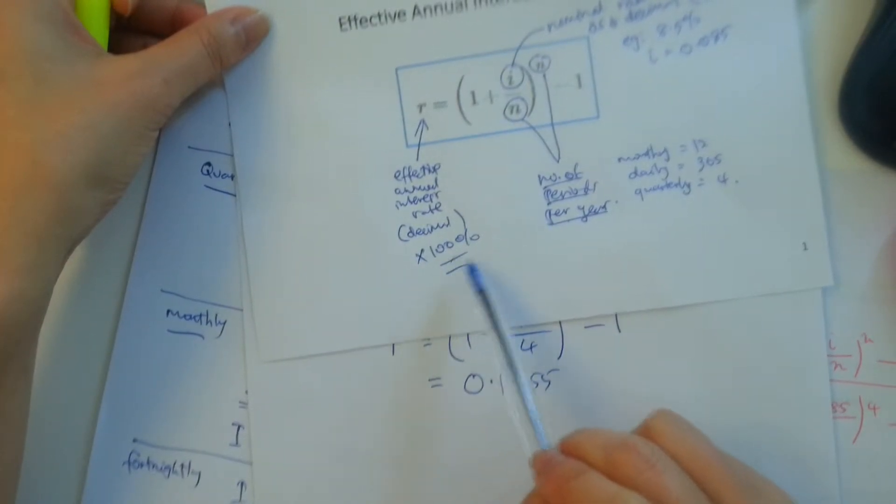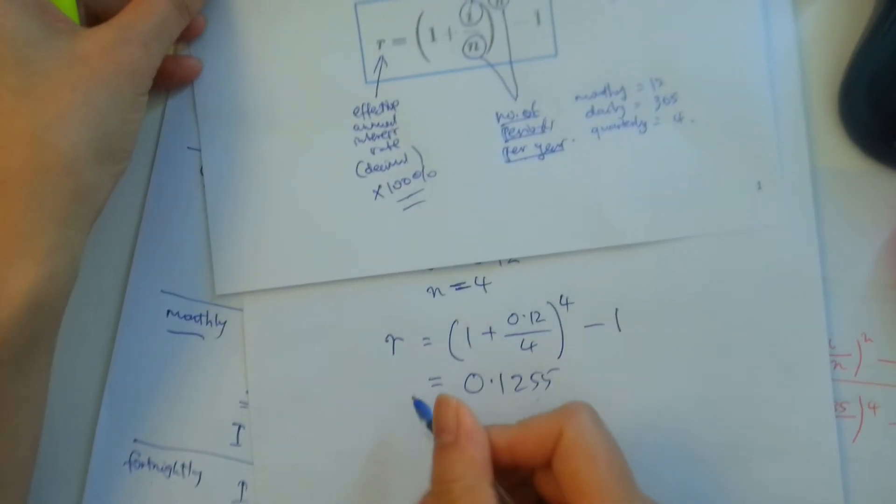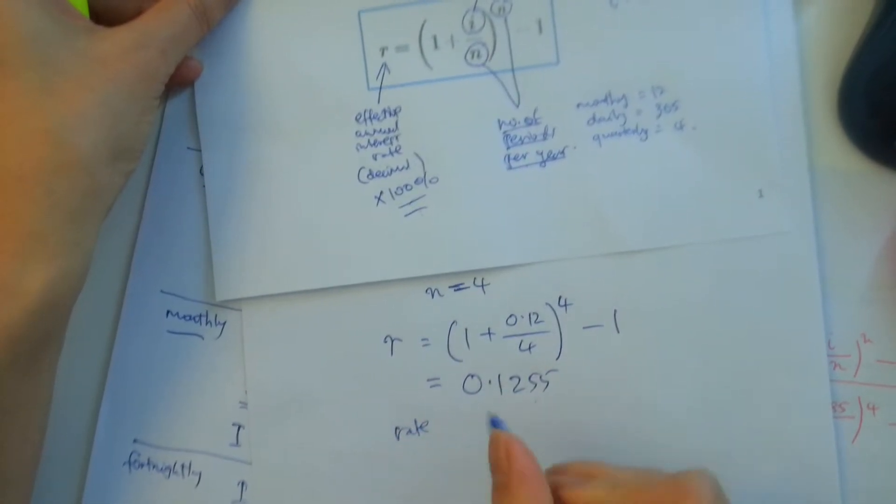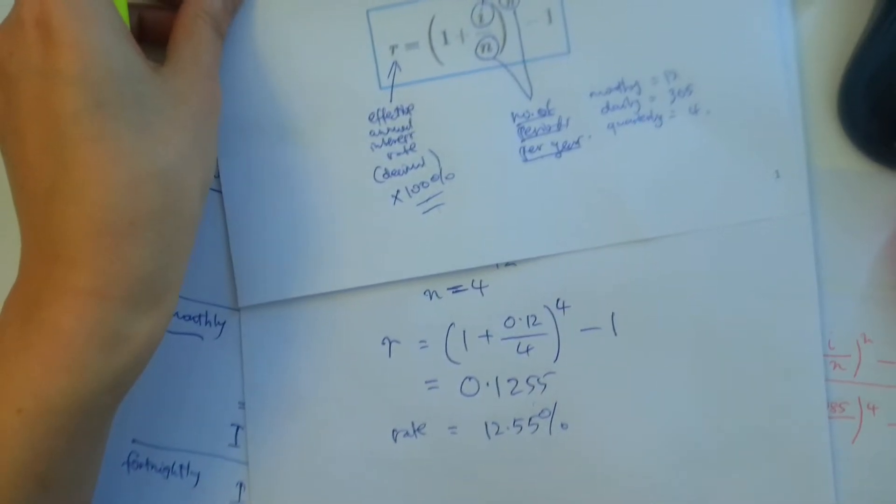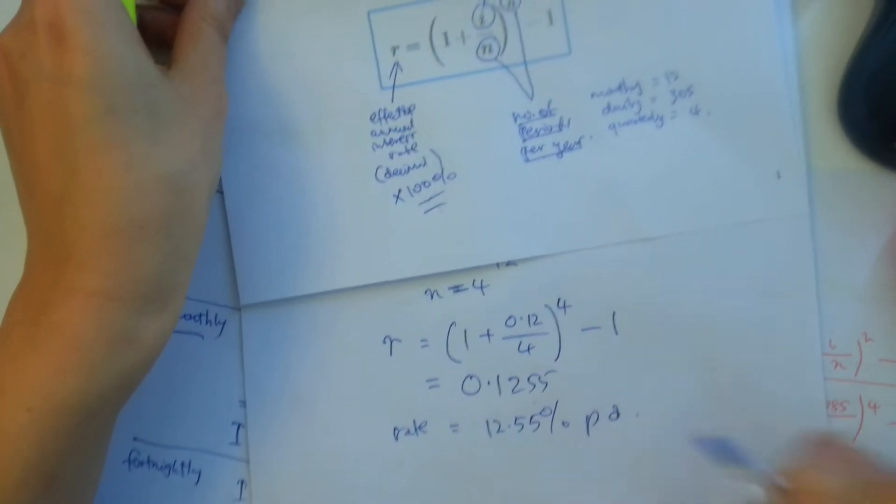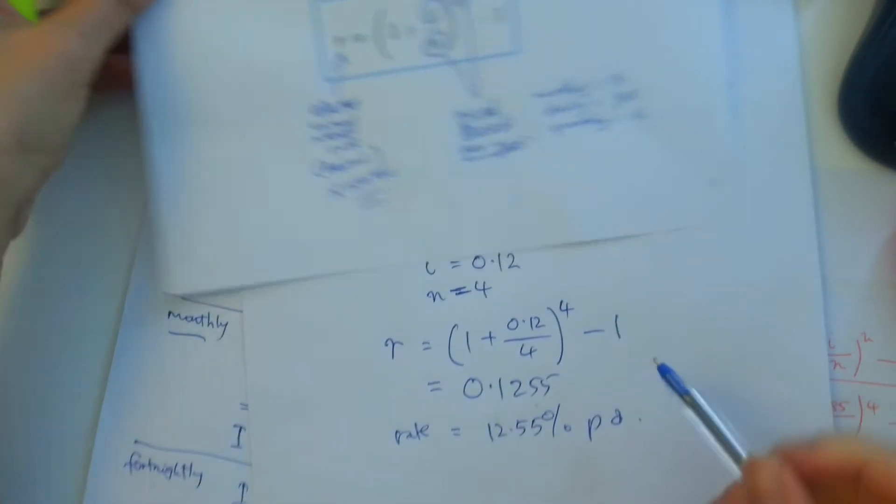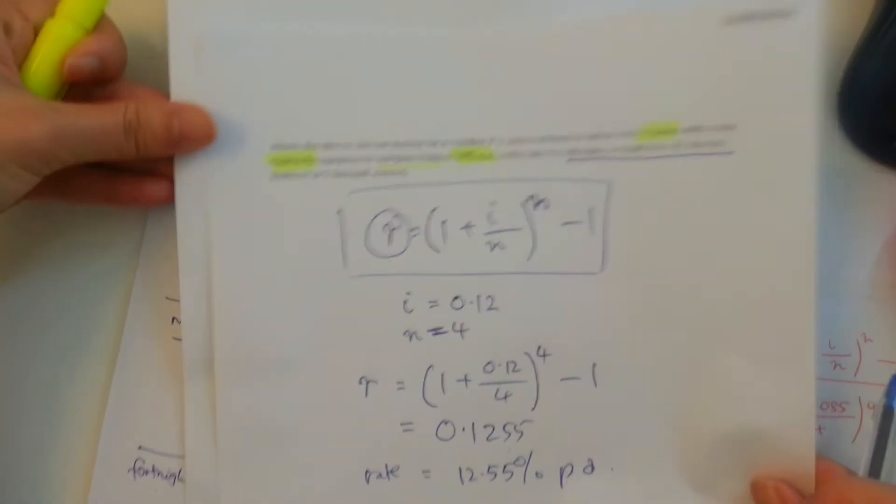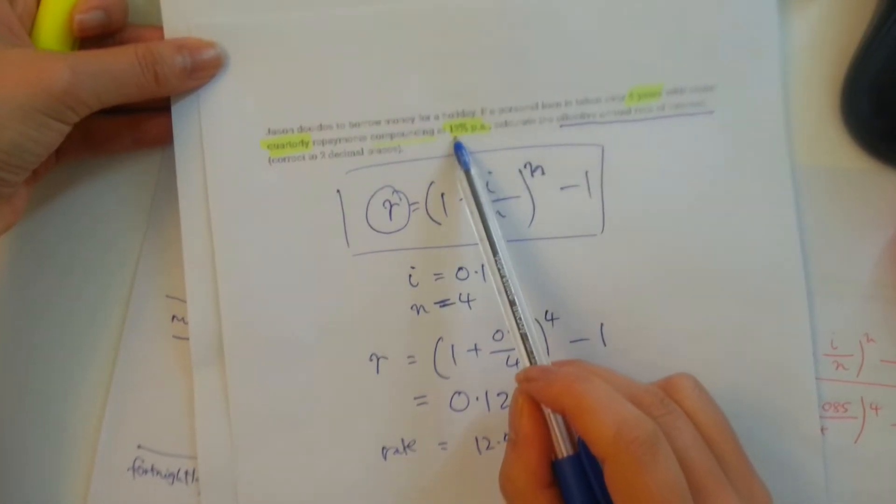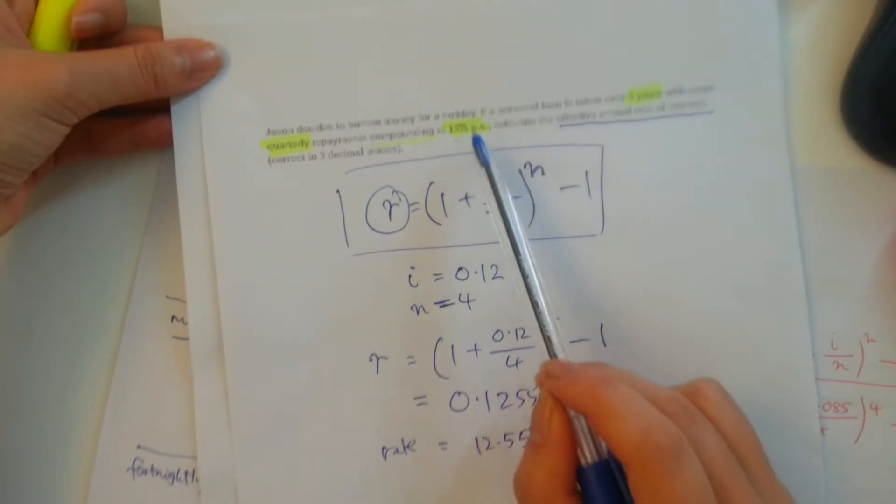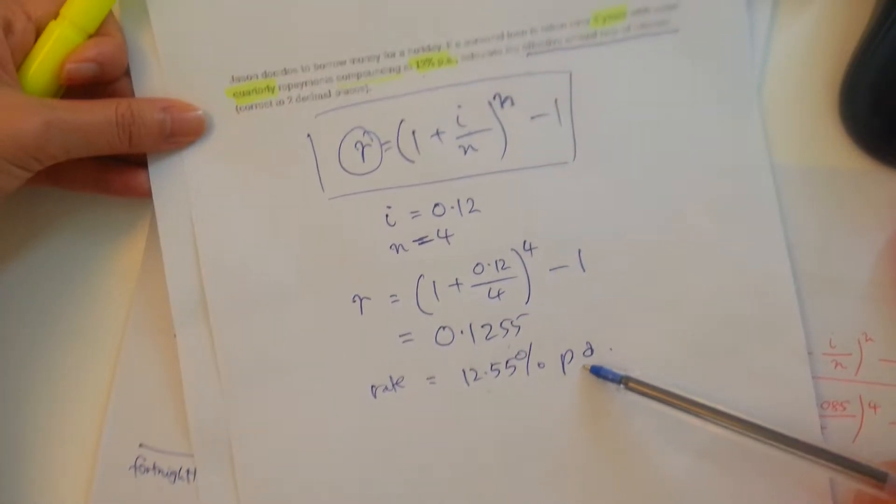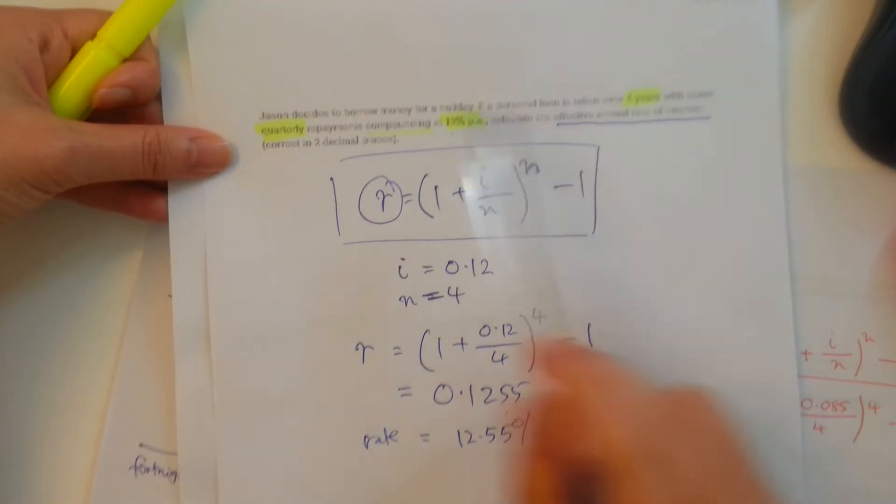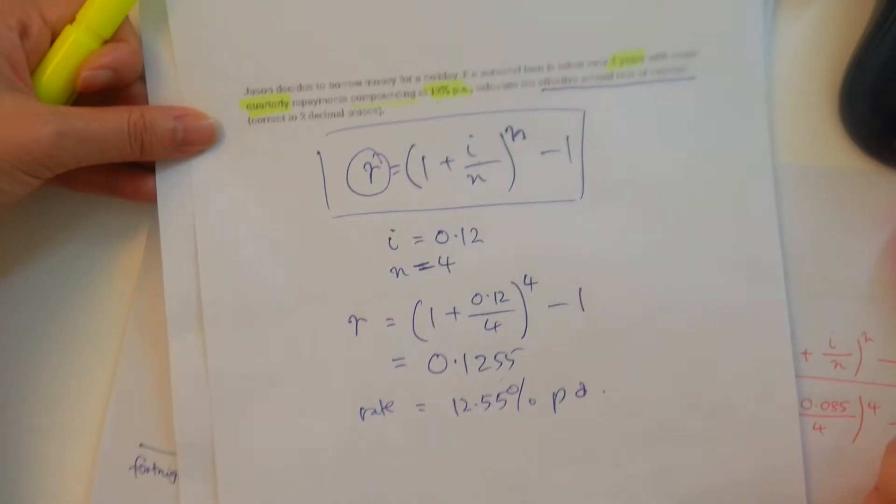Now remember that the annual interest rate in this formula will only give it to you as a decimal, and you want it to make sense, so you want it to convert into percentage, so therefore you will multiply it by 100%. So the rate is really 12.55% per annum. So what we're saying is that even though the terms is 12% per annum, you're effectively paying 12.55% per annum under these conditions, under the quarterly repayments. Are we cool?